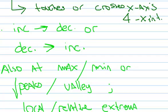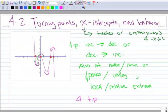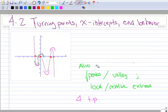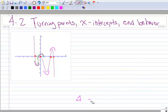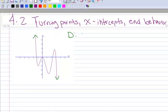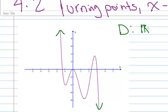Now let's talk about end behavior, because it is extremely important. End behavior tells you what the polynomial is doing on both ends. Since it is a polynomial, the domain of the function is always all real numbers.